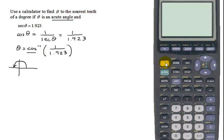Remember, inverse trig functions are second cosine. That gives me the inverse cosine of 1 divided by 1.923. Close my parentheses, and then hit enter.